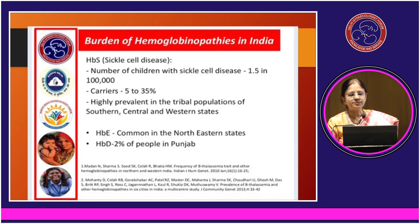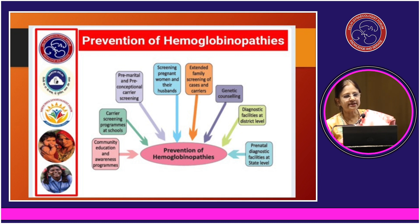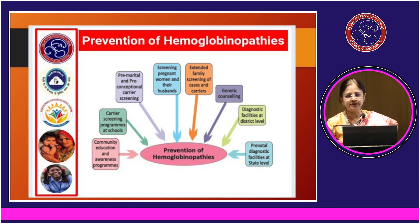Sickle cell disease is prevalent mainly in the southern, central, and western states of India. HbE is common in the northeastern states and HbD is seen in Punjab. To prevent hemoglobinopathies, we can have awareness programs in the community, carrier screening programs in schools, pre-marital and pre-conceptual carrier screening, and screening of pregnant women. We see all antenatal patients, so we can get HPLC done to find the carrier status of the female. If she is a carrier, the partner must also be tested. Extended family screening, genetic counselling, and prenatal diagnostic facilities at the state and district level are all important.